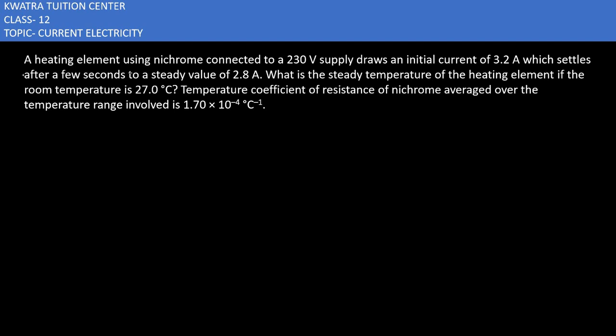Starting with the sixth one, it says heating element using nichrome connected to a 230 volt supply draws an initial current of 3.2 ampere which settles after a few seconds to a steady value of 2.8 ampere. What is the steady temperature of the heating element if the room temperature is 27 degree Celsius? Temperature coefficient alpha is given in this case.